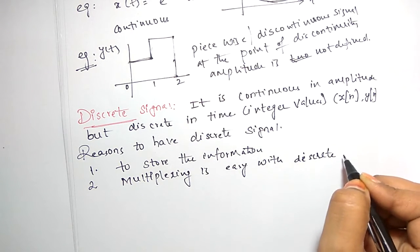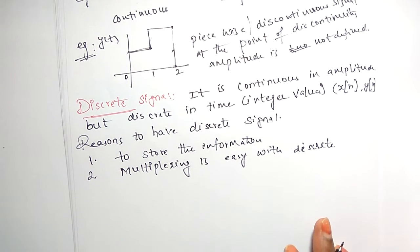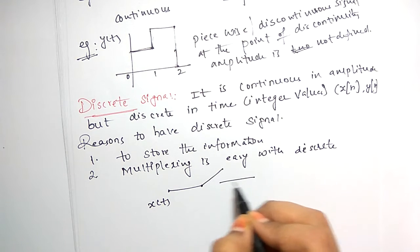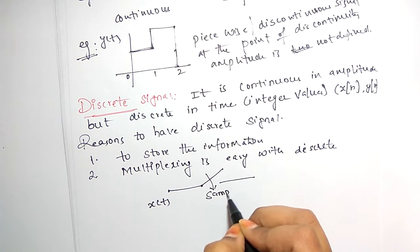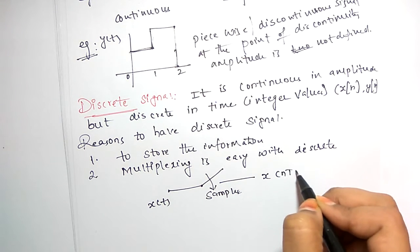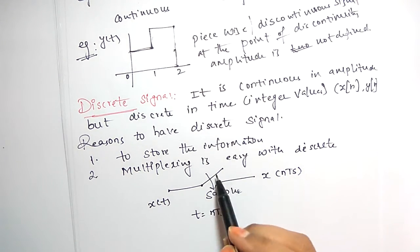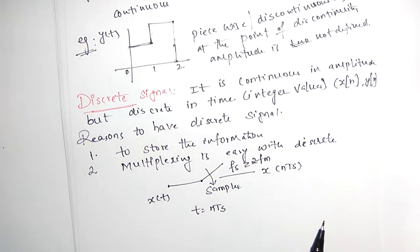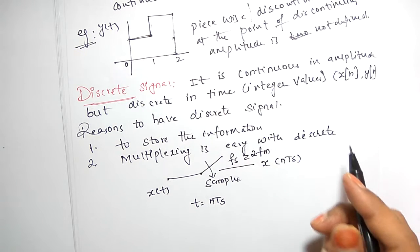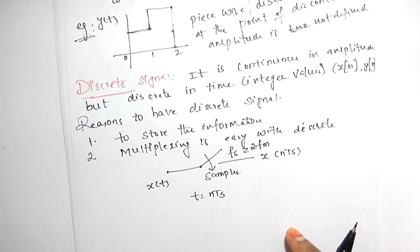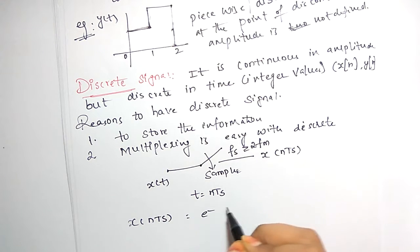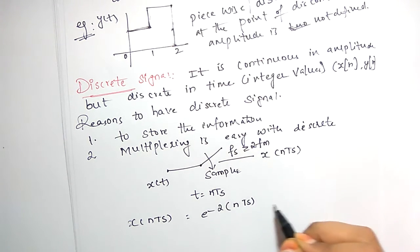How can you convert a continuous signal x(t) to a discrete signal? It can be converted using a sampler, changing x(t) to x(nTs) by replacing t with nTs. The frequency of the sampler must be greater than or equal to 2 times the maximum frequency of the continuous signal. Taking the previous example x(t) = e^(-2t), we keep t = nTs, giving x(nTs) = e^(-2nTs).